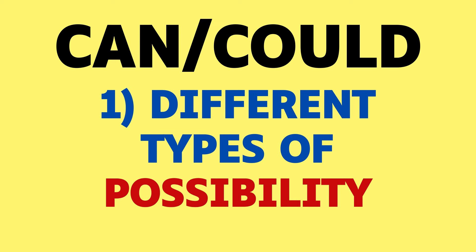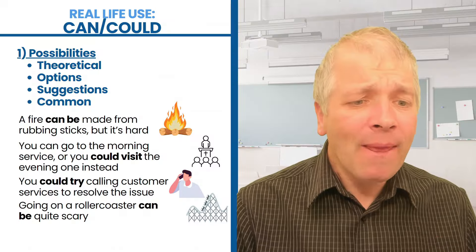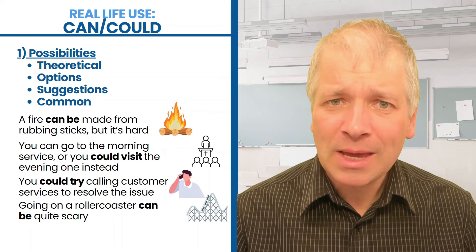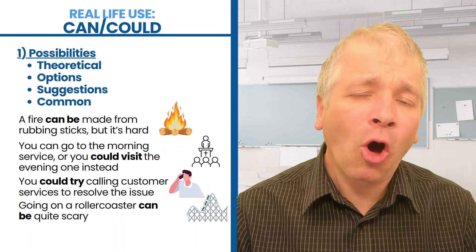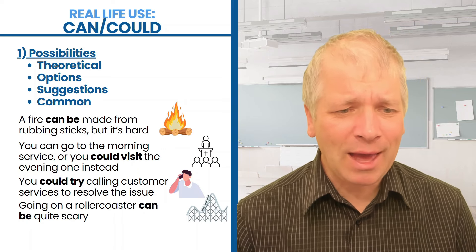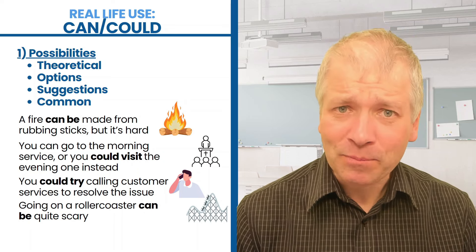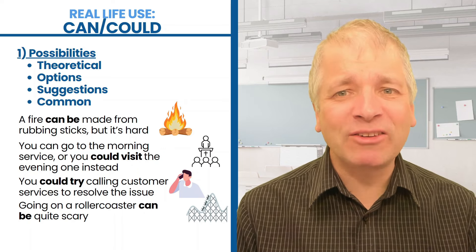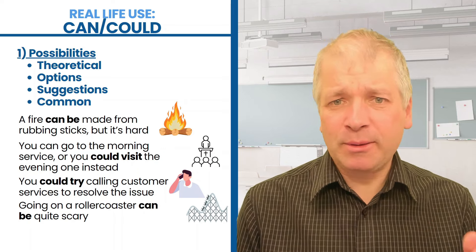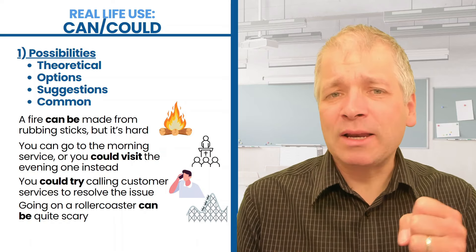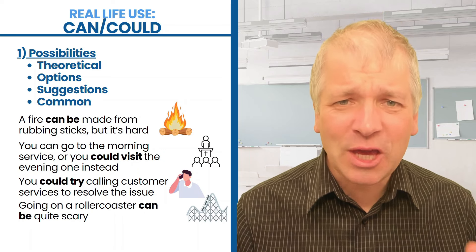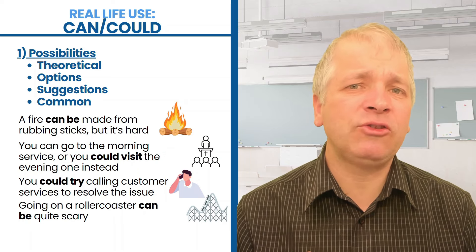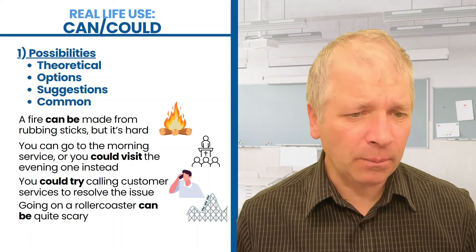Now we look at can and could together. One: different types of possibility. Here are some common reasons why we use can or could for possibilities — theoretical use, when giving options, suggestions, and when there is a common possibility. Let's first look at theoretical possibility. Look at the fire: a fire can be made from rubbing sticks, but it's hard. In theory, according to science, if you rub sticks together, eventually you might start a fire. Most people don't succeed when they try this, but it might be possible. So can here introduces a possibility that's just theoretical.